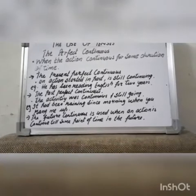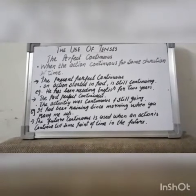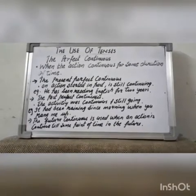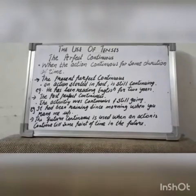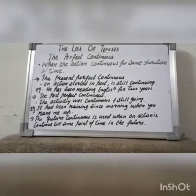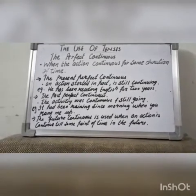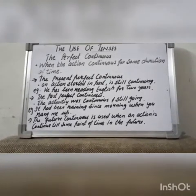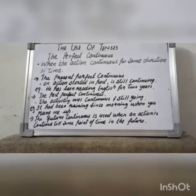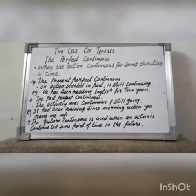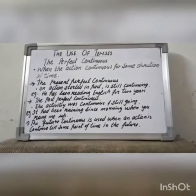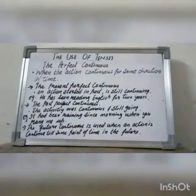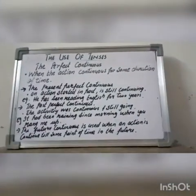The Present Perfect Continuous is used when an action started in the past and is still continuing. For example, 'He has been reading English for two years' and the action is still continuous. The Past Perfect Continuous is used to indicate that the activity was continuous and still going on at a named point or period of time in the past. For example, 'It had been raining since morning when you rang me up' and it still continued.